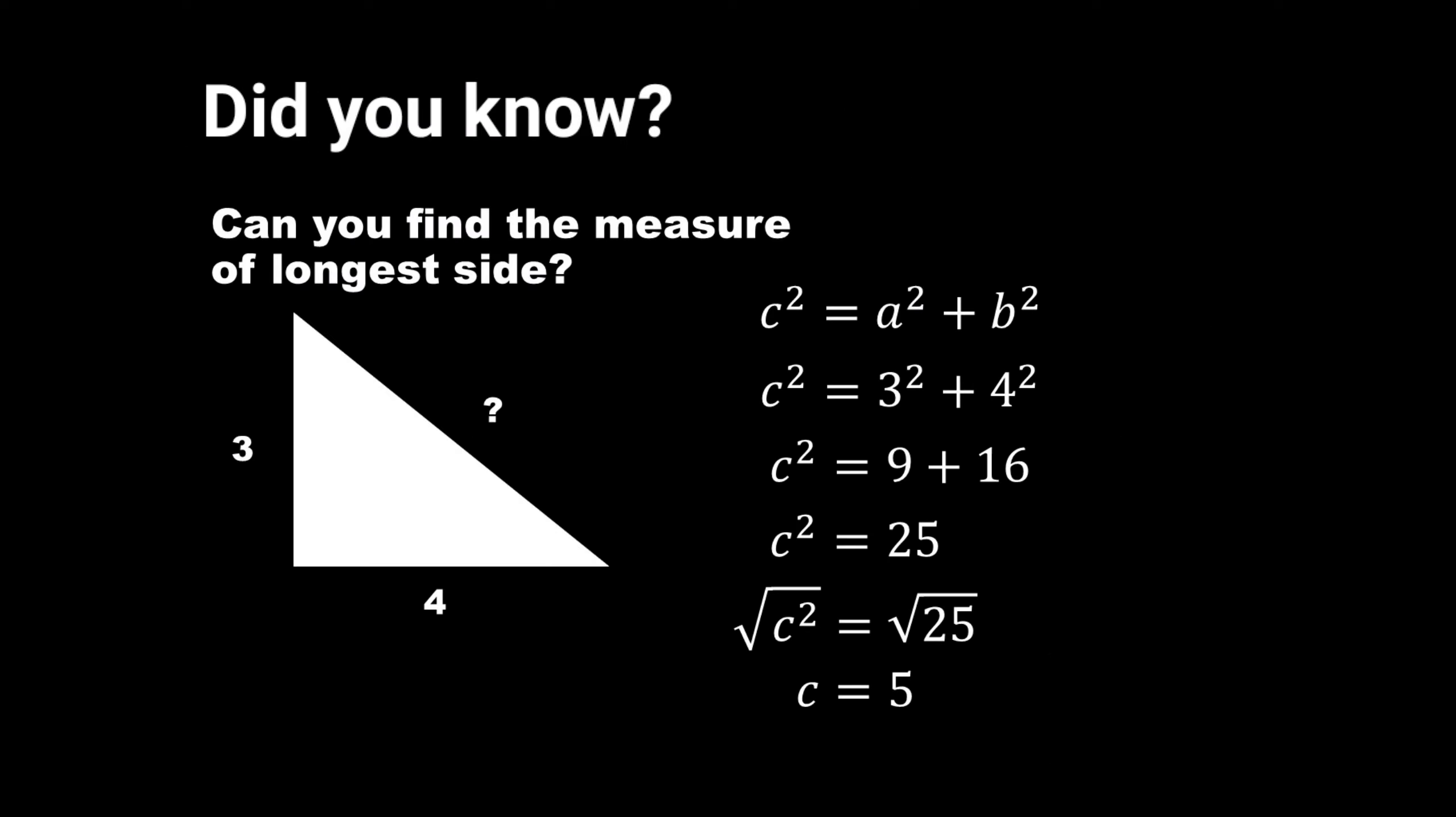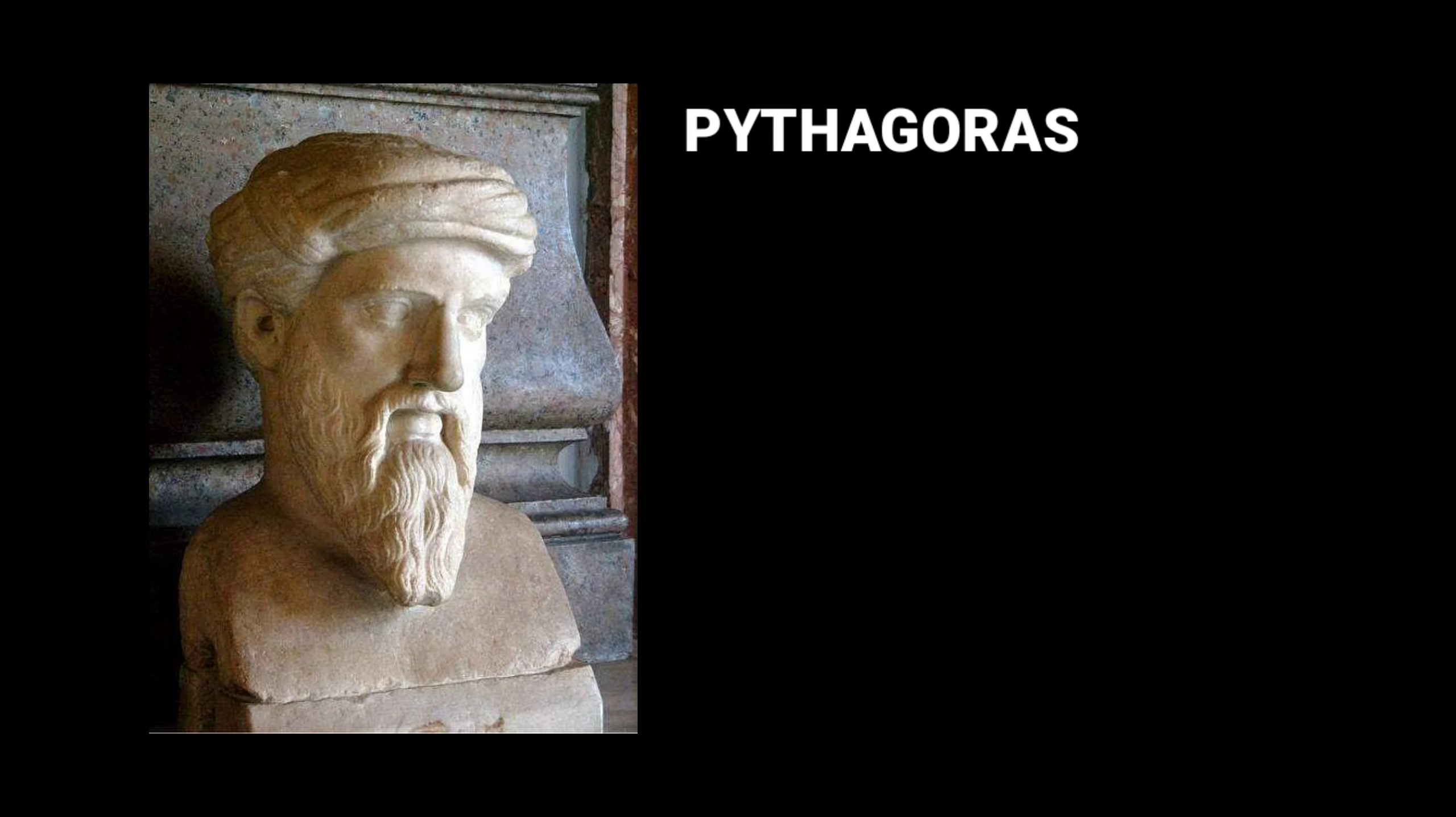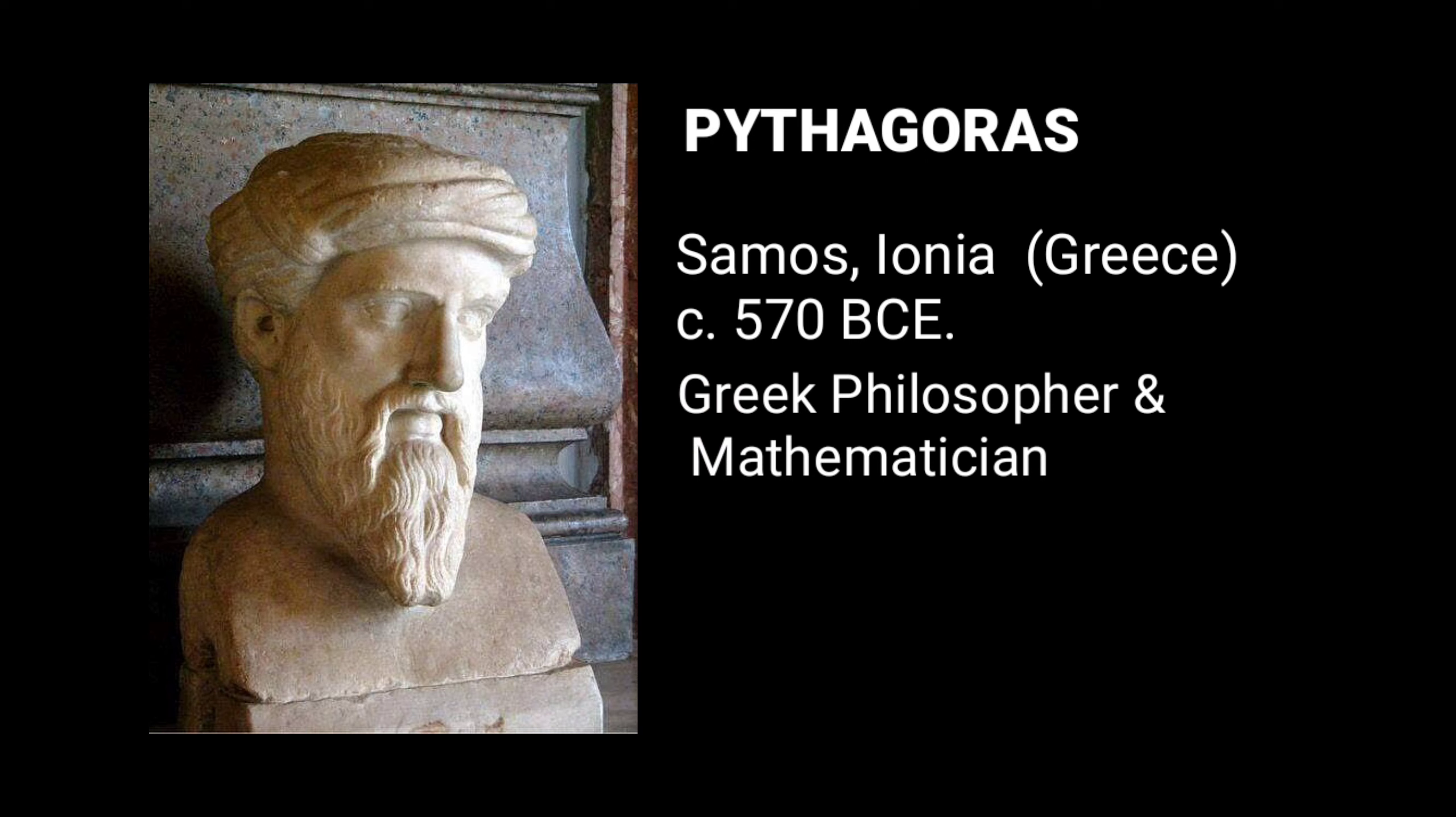Did you know? Pythagorean theorem was discovered by Pythagoras. He was born in Samos, Ionia in c. 570 BCE. He was a Greek philosopher and mathematician. His central belief is, all is number.